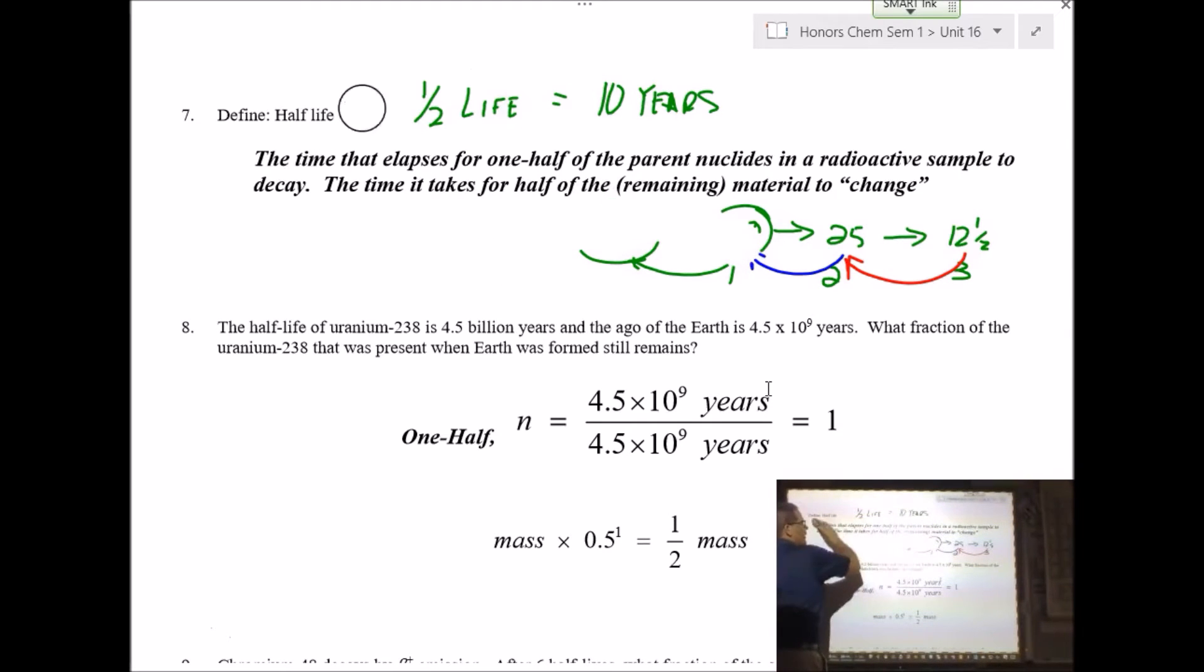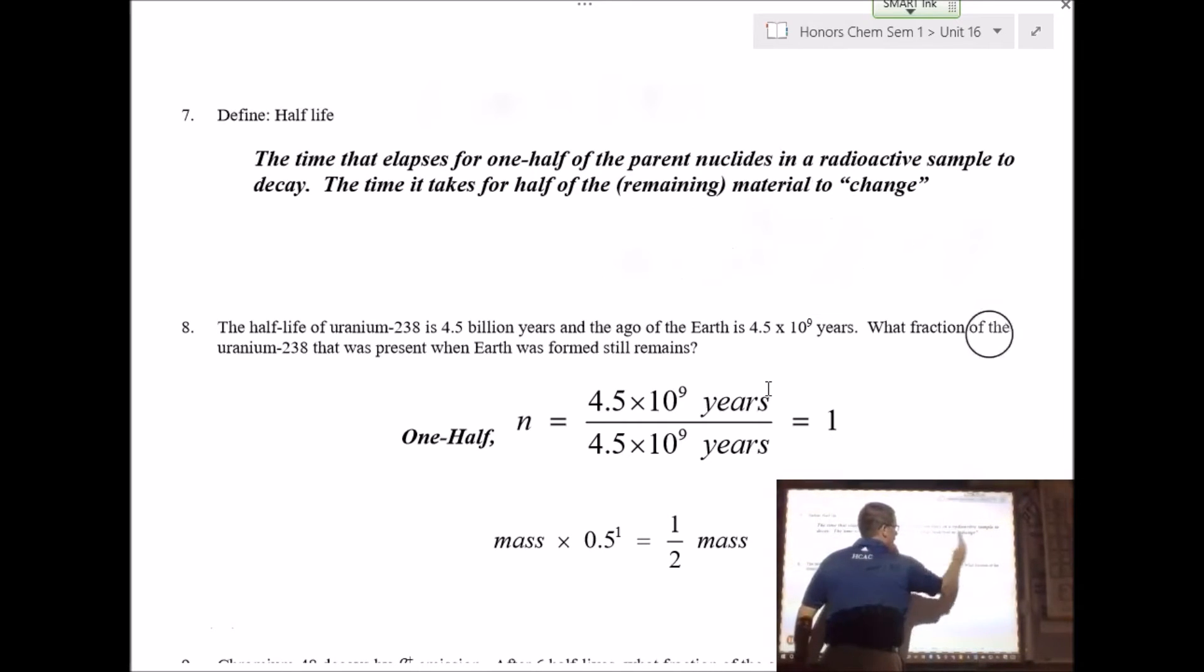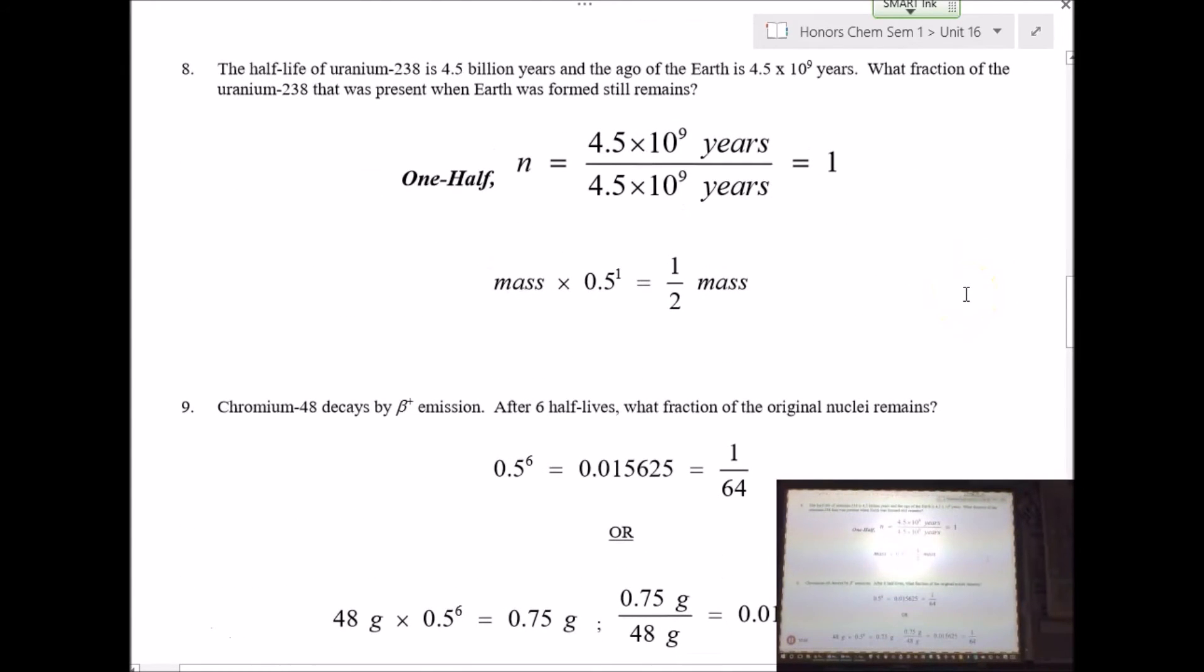And then, looking at the next question, I love this question. Because it is the easiest one that trips a lot of people. So, number 8 says, the half-life of Uranium-238 is 4.5 billion years. And the age of the Earth, I should say age, the age of the Earth is 4.5 billion years. What fraction or percent of the Uranium-238 was present when the Earth was formed still remains? So, you're finding out how many half-lives. So, 4.5 times 10 to the 9 divided by 4.5 times 10 to the 9. So, you undergo one half-life. So, whatever mass you chose, it's half of that. So, it undergoes one half-life. Don't overthink questions like that.